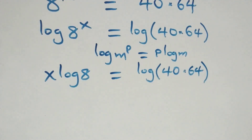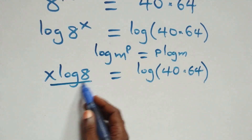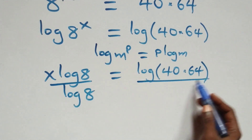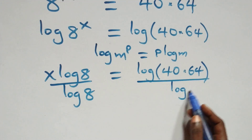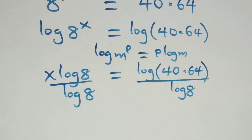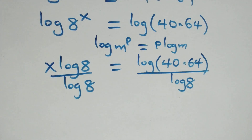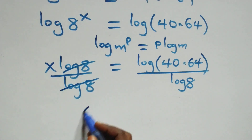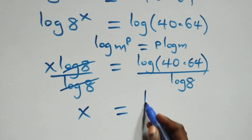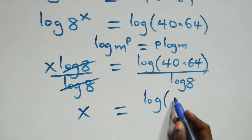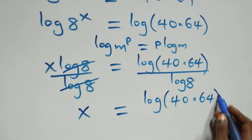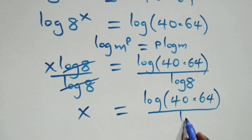The next step: we divide both sides by log 8. Dividing this side by log 8 and also dividing this side by log 8 means log 8 cancels each other, and we have x left, which equals log of 40 times 64 over log 8.